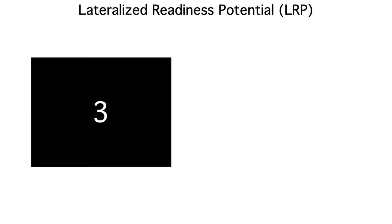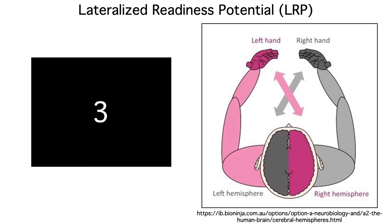For example, subjects might be instructed to make a left-hand response for odd numbers and a right-hand response for even numbers. Just like the visual system, the motor system is contralaterally organized, with the left hemisphere controlling the right hand and the right hemisphere controlling the left hand.